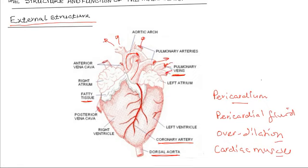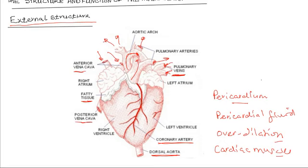There is the anterior vena cava, also known as the superior vena cava, that brings blood from the neck and head region. The posterior vena cava, also known as the inferior vena cava, brings blood from the chest and the lower parts of the body.